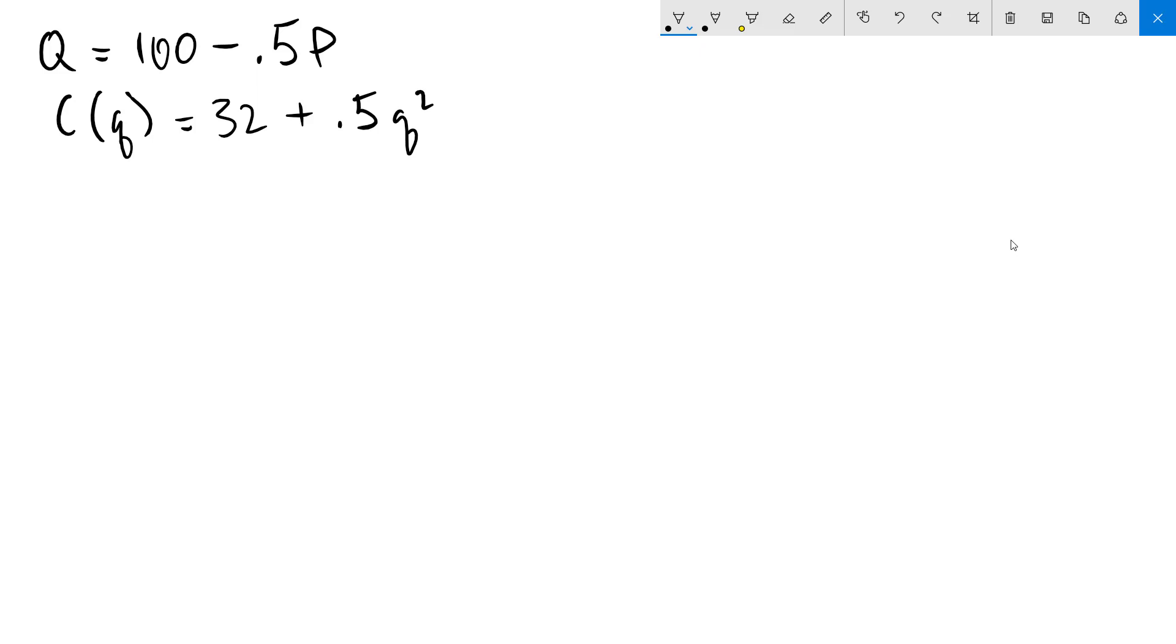Hello everyone. In this video I'm going to talk about an example of perfect competition. First we're going to solve for the short-run profit maximizing output for a firm and then we're going to solve for the long-run equilibrium in the market.